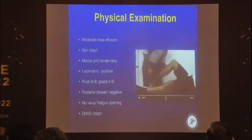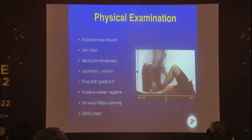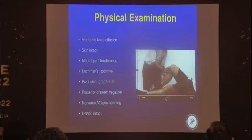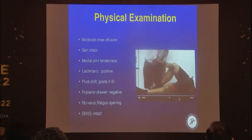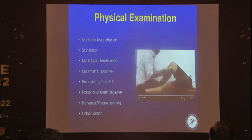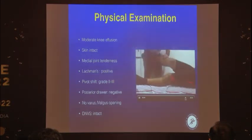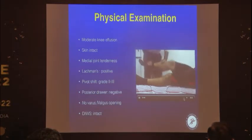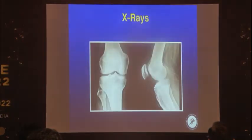On his right side, Lachman's test was positive. There was slight medial joint line tenderness. Posterior drawer was negative. Anterior drawer was 2-plus. In the awake patient, pivot shift was also positive. His X-rays were almost normal.